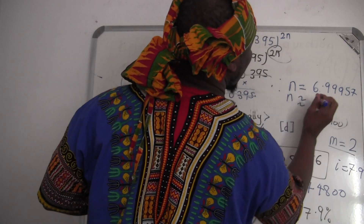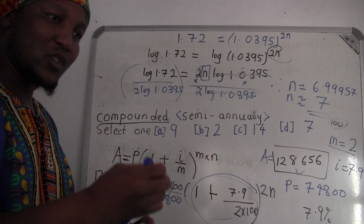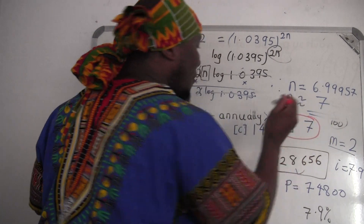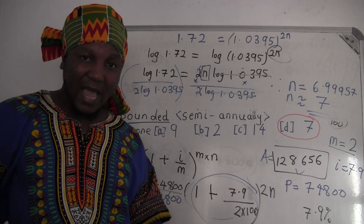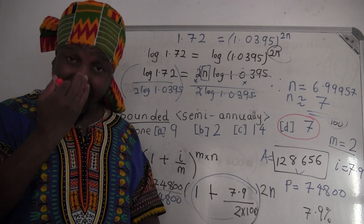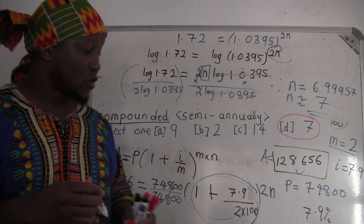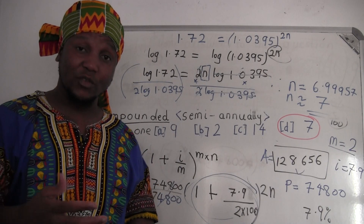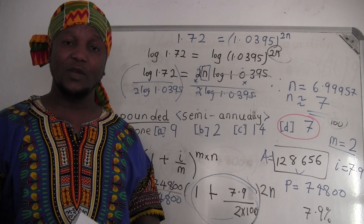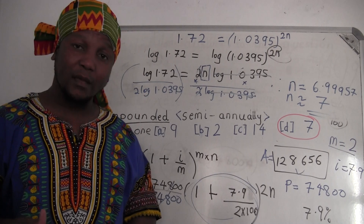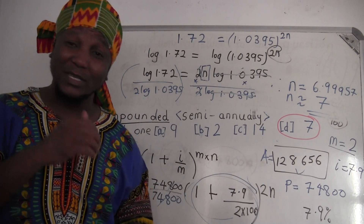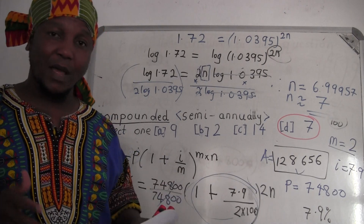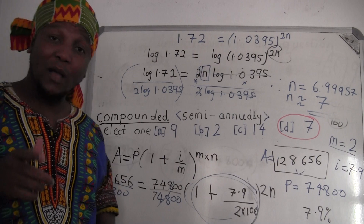When you approximate 6.9999, it's almost equal to 7. So the answer, rounded to the nearest year, is 7 years — that would be option D in the given question. If you have any questions, please ask. Like the video, share with your friends, and you can reach me by email for any queries. I've been off YouTube for a while due to other responsibilities, but I'm back now and will try to post solutions every day. Thanks so much for your time — see you soon. Peace.